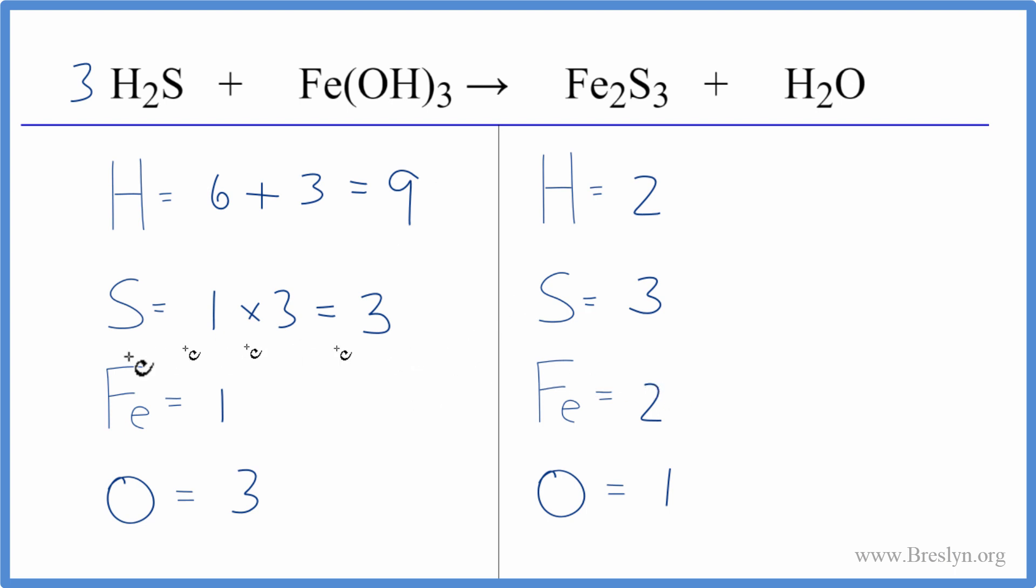That's okay. Let's fix the iron, see what happens. We have two here and one here. We'll put a two in front of the Fe(OH)3. So we have one times two, that gives us two iron atoms, those are balanced,